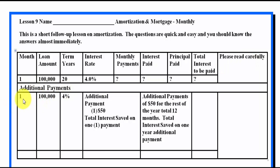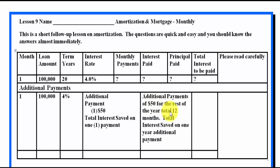For additional payments — for one month at a hundred thousand dollars and four percent — we want you to make one payment and one payment only of fifty dollars additional, and then write down how much money you saved by making that one payment of fifty dollars. Then go back to your spreadsheet and make several more payments — for a total of 12 months additional payment — and write the interest you saved on one year's additional payment.